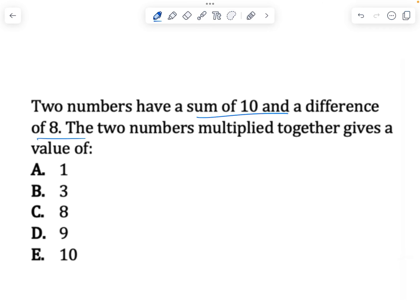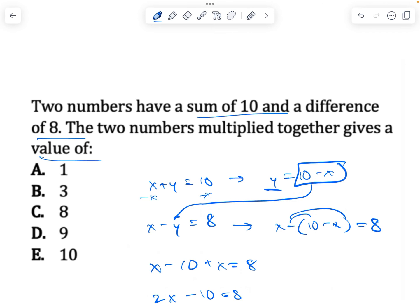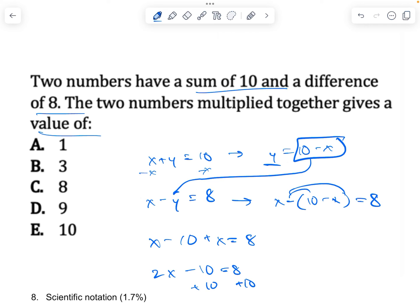Two numbers have a sum of 10 and a difference of 8. The two numbers multiplied together gives what? If they have a sum of 10, let's just say x plus y equals 10. And if a difference of 8, x minus y is equal to 8. Now I have a system of linear equations. I will make this equal to y. Subtract x on both sides, y equals 10 minus x. And then this one, I'm going to take my y, which is equal to 10 minus x, plug it right there. So that means x minus (10 minus x) is equal to 8. Now I have everything in terms of x. Distribute the negative to each of these. So x minus 10 plus x is equal to 8. 2x minus 10 is equal to 8. Add 10 on both sides. 2x is equal to 18 divided by 2, x equals 9.